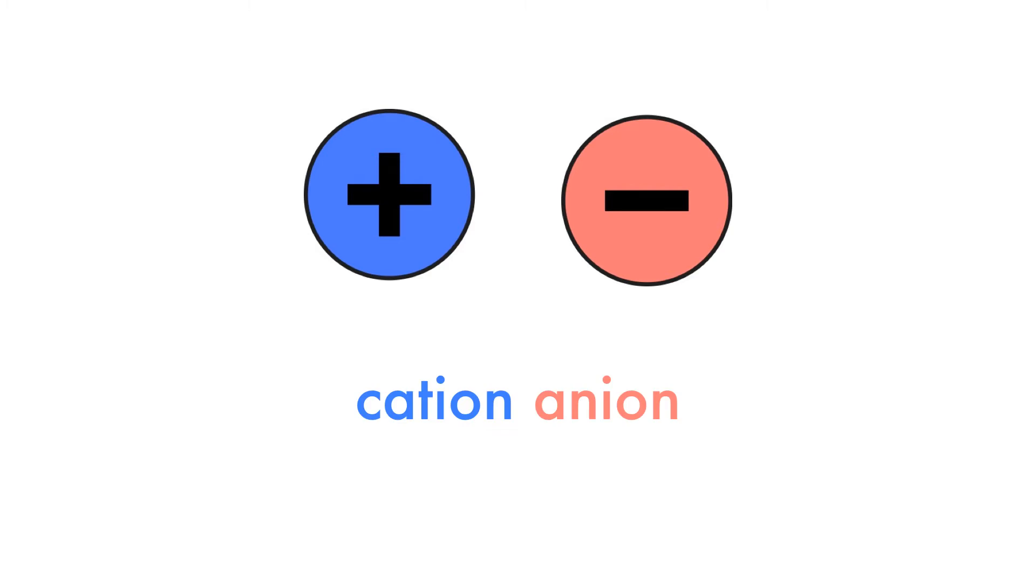The second rule concerns how we name complex ions. If a cation or anion contains more than one atom, we enclose them in square brackets.